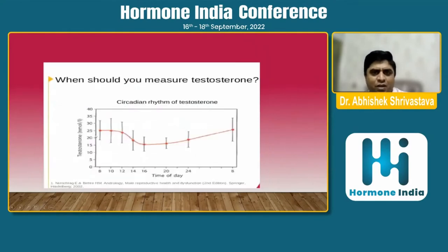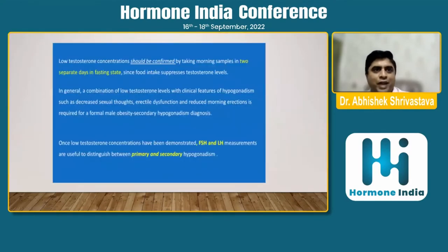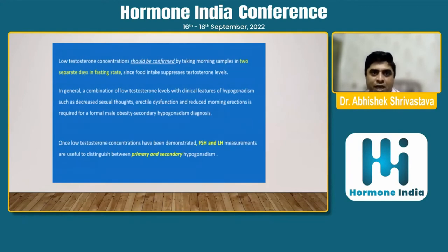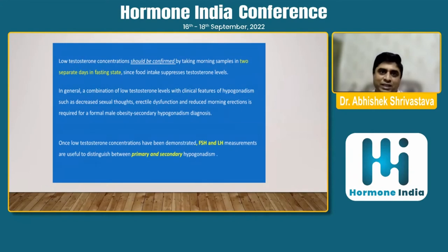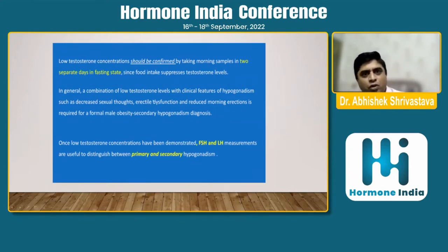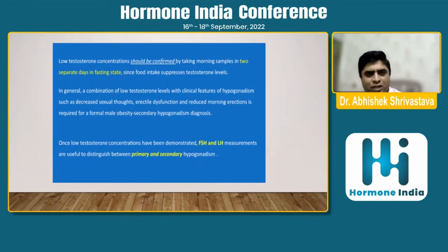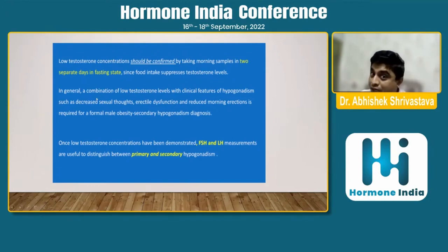Regarding diagnosis: total testosterone concentrations should be confirmed by taking morning samples on two separate days in a fasting state, since food intake suppresses testosterone levels. A combination of low testosterone levels with clinical features of hypogonadism, such as decreased sexual function, can be used to term a patient as hypogonadal.